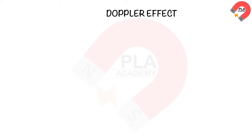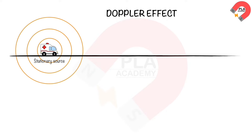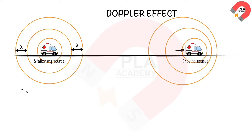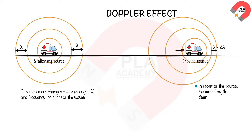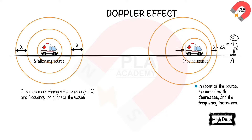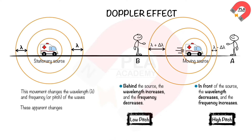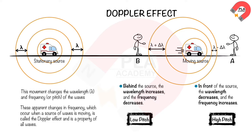Doppler effect. When a stationary ambulance emits sound waves, the wavefronts spread out symmetrically, forming circles around the source. If the wave source moves, the waves become compressed in front of it and stretched behind it, changing the wavelength and frequency. In front of the source, the wavelength decreases and frequency increases — Person A hears a higher pitch. Behind the source, the wavelength increases and frequency decreases — Person B hears a lower pitch. These apparent changes in frequency when a source of waves is moving is called the Doppler effect, and is a property of all waves.